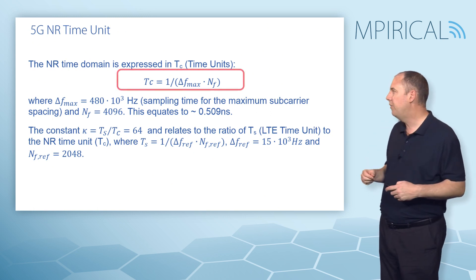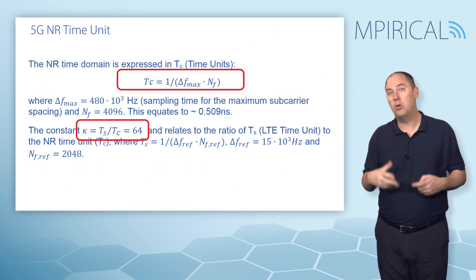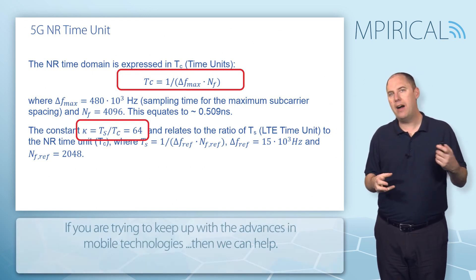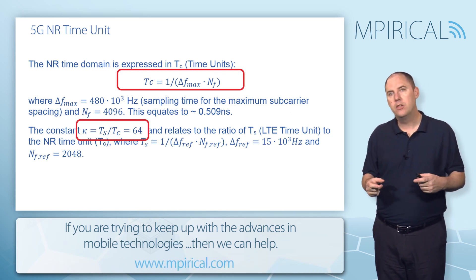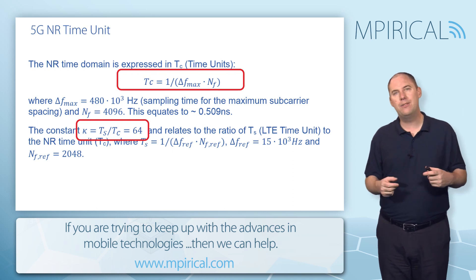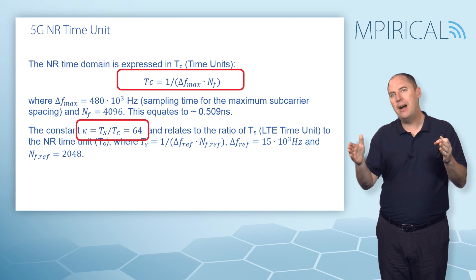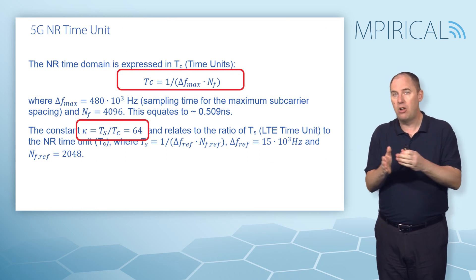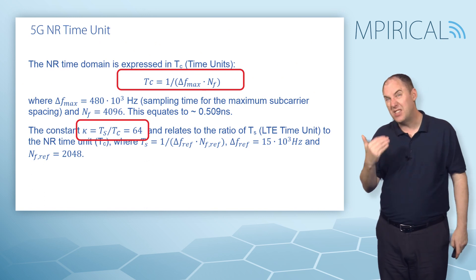You'll also see in addition to this equation a value called kappa. Kappa is the ratio between the 5G time unit and the 4G time unit, and it's a constant set to 64. So effectively, the 4G time unit TS equals 64 times the 5G time unit TC. This means 5G has a lot more granularity in the time domain in terms of time units, and that has a good knock-on effect on how we describe the cyclic prefix.